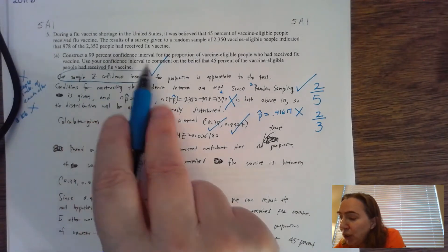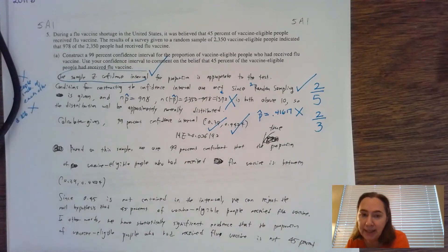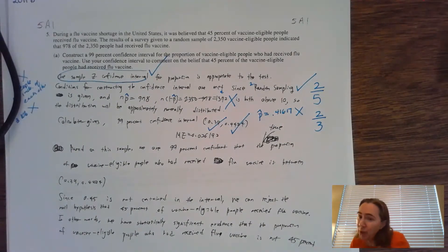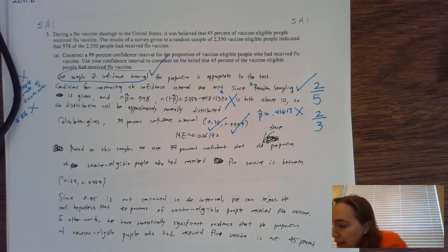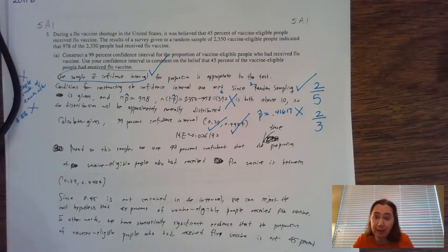Remember, the safest thing to do is state the name of the test and do a direct copy off your calculator. The question says construct an interval and then use the interval to comment on the belief that 45% have received the flu vaccine. It does not say to interpret the interval, so I'm not looking for 'I am 99% confident that the true population proportion of vaccine-eligible people who received the flu vaccine is between those two numbers.'